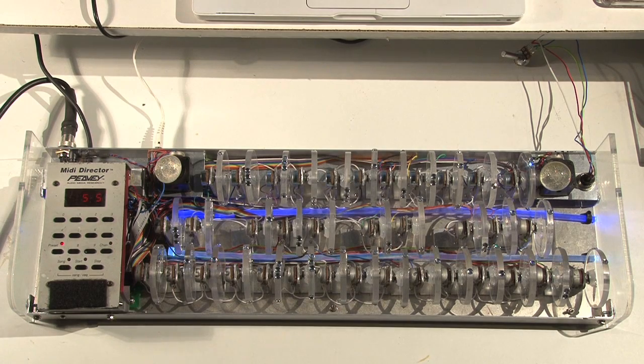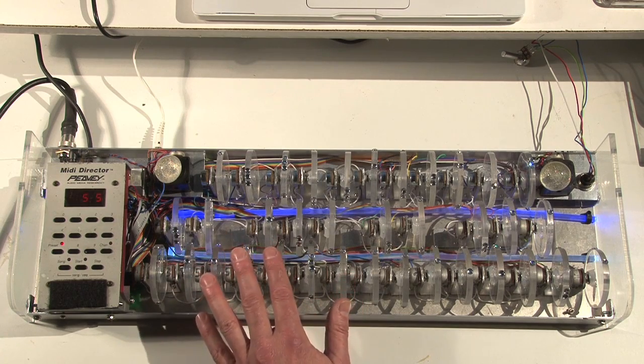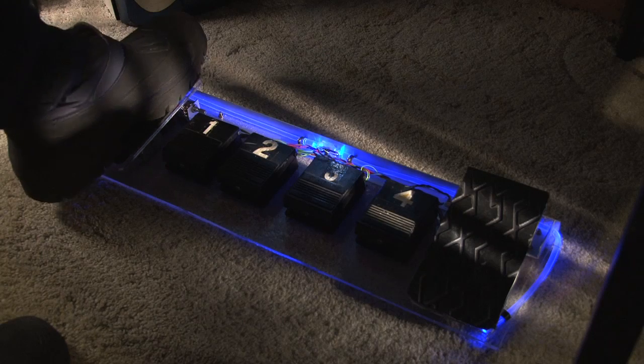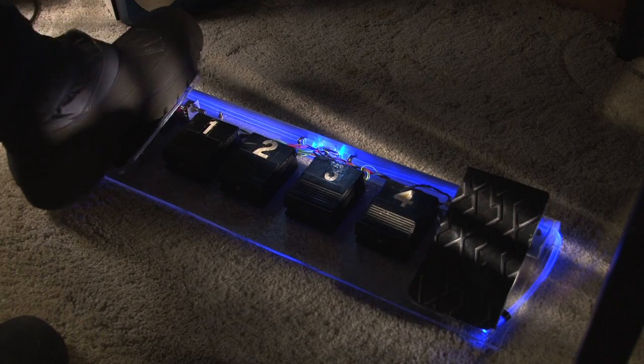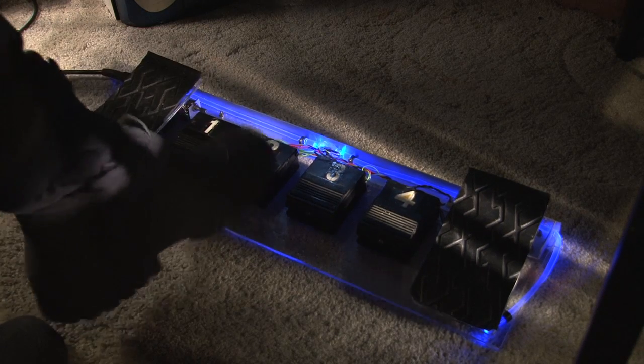The Claude controller itself, which is an array of 36 wheels and two joysticks, which you manipulate with your left hand, and these all send controller information to a synthesizer. And a pedal board, which has two continuous pedals and four switches for manipulating things with your feet.